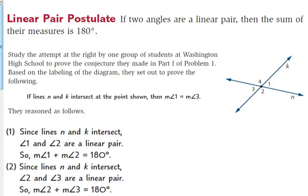We are trying to prove that if lines N and K intersect at this point, then the measure of angle 1 is equal to the measure of angle 3. We know that because angles 1 and 3 are vertical angles — they share a vertex but do not share a side. We know vertical angles are congruent, but we're going to prove why they are congruent.